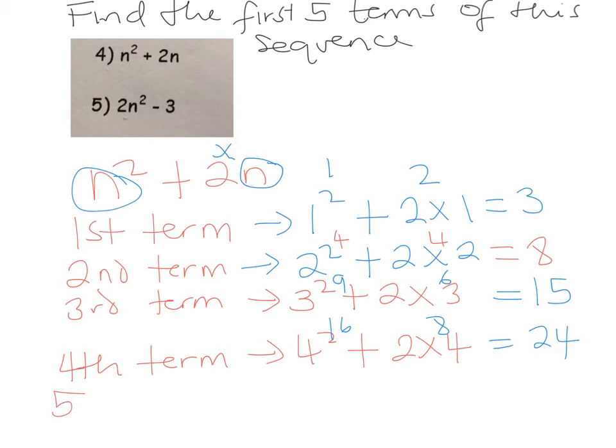So for the final term, which is the fifth term we've been asked to find here, we're going to replace n with 5. So it's 5 squared plus 2 times 5. 5 squared is 25, and 2 times 5 is 10, so it's 35.